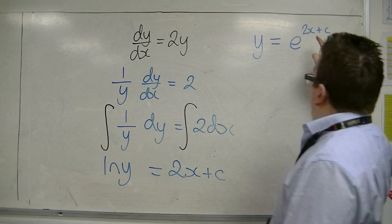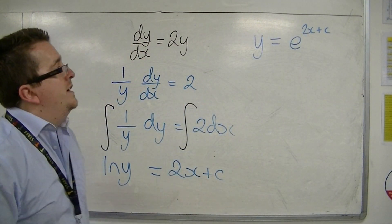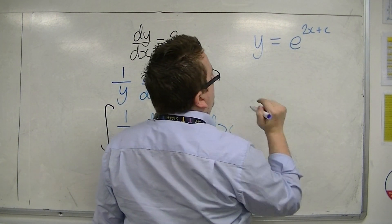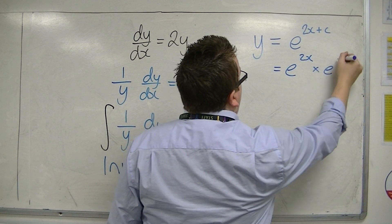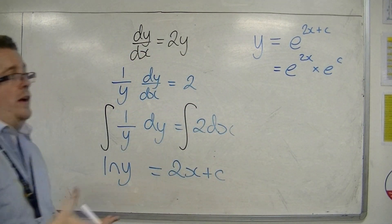Now, if I just look at the right-hand side there, I can tidy this up. e to the 2x plus c is the same as e to the 2x times e to the c. Because that's how indices work.